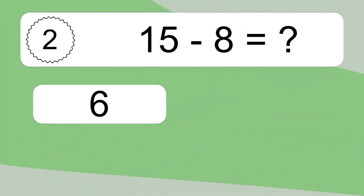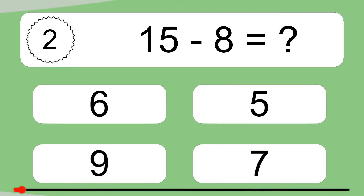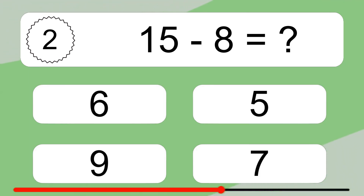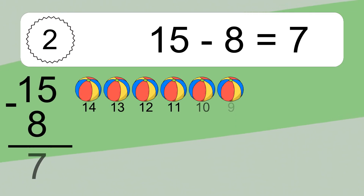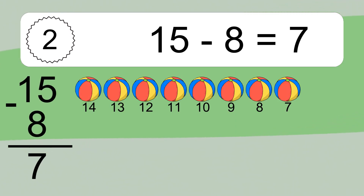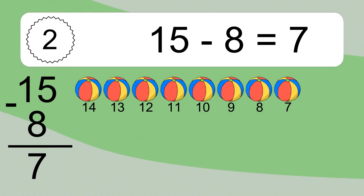15 minus 8 equals what? 15 minus 8 equals 7. Let's count it: 14, 13, 12, 11, 10, 9, 8, 7.